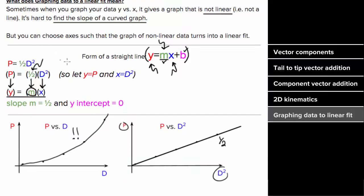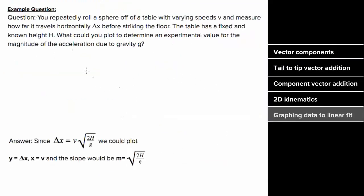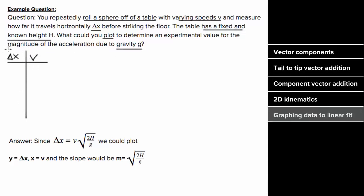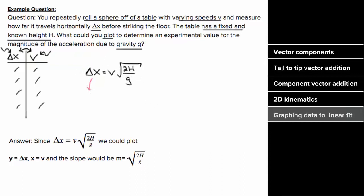But a lot of people find this confusing and strange. So what would an example problem where you have to graph data to a linear fit look like? Say you were given this question, and you repeatedly roll a sphere off a table with varying speeds v and measure how far they travel, delta x, before striking the floor. If the table has a fixed and known height h, what could we plot to determine an experimental value for the magnitude of the acceleration due to gravity? So we repeatedly changed the speed and measured how far the ball went — those are the quantities that are varying, so they'll be involved in the x and y axes. To figure out what to plot, we need to find some relationship between these two variables so that we can put that relationship in the form of a straight line. In the 2D kinematics section, we derived a formula for how far a ball goes rolling off a table in terms of the height and the acceleration due to gravity. So this is the expression that relates how fast it was going to how far it went, and we need to put this in the form of a straight line. It's easiest to make the left-hand side y.